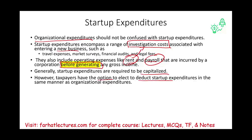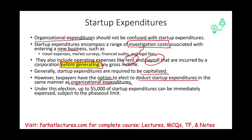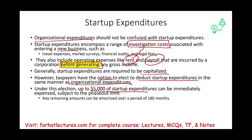Taxpayers have the option to elect to deduct startup expenditure in the same manner as organizational expenditure. Under this election, $5,000 of startup costs can be immediately expensed — again subject to the phase-out limit — and any remaining amount is amortized over 180 months. The rules governing the election for organizational expenditure apply equally to startup expenditure. The key takeaway: GAAP treatment differs from IRS treatment for both types, which is why they matter for Schedule M1 reconciliation. Good luck, study hard, and stay safe.